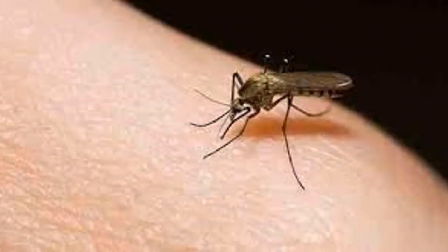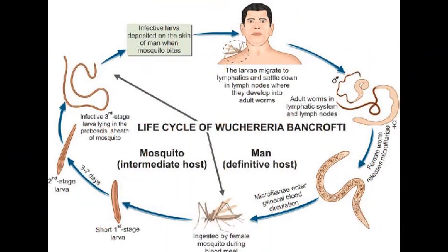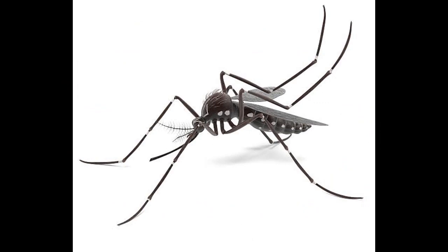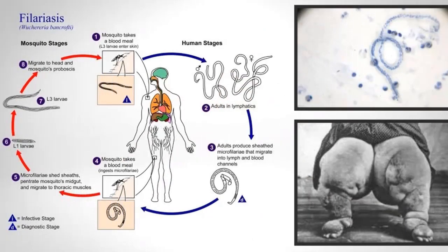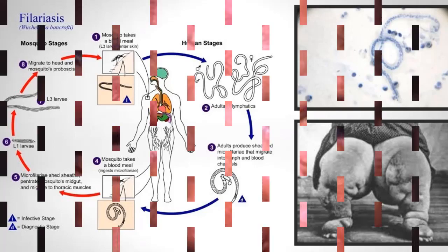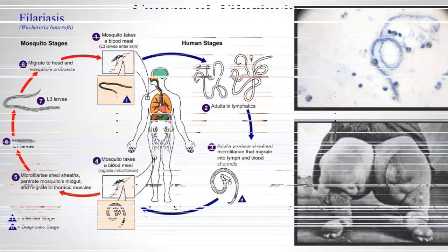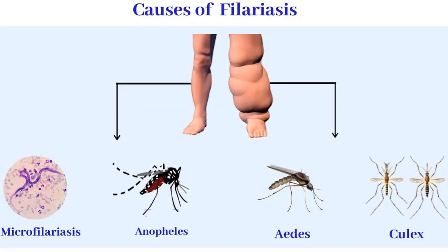Lifecycle. W. bancrofti carries out its life cycle in two hosts. Humans serve as the definitive host and mosquitoes as the intermediate host. The adult parasites reside in the lymphatics of the human host, found mostly in the afferent lymphatic channels of the lymph glands in the lower part of the body. The first-stage larvae, known as microfilariae, are present in the circulation.